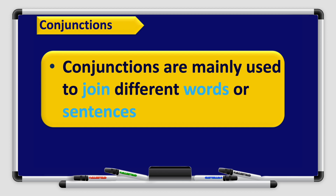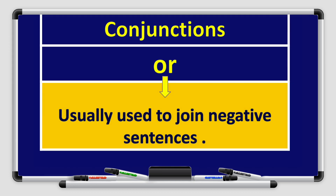Conjunctions are mainly used to join different words or sentences together. The conjunction 'or' is used to join negative sentences.